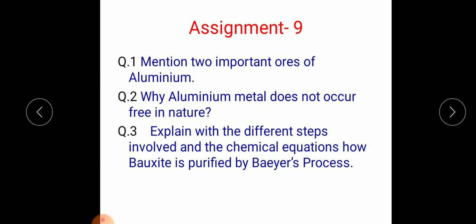Now for this assignment, Assignment 9: Question 1, mention two important ores of aluminium. Question 2, why aluminium metal does not occur free in nature? Question 3, explain with the different steps involved and the chemical equations how bauxite is purified by Baeyer's Process. Complete this assignment and send it to my email.